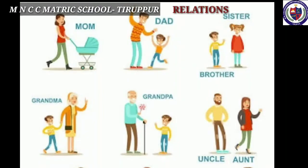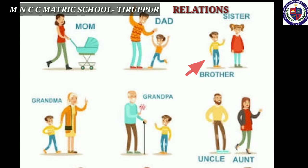See the picture. Now we will see about relations. Who is the first person in your family? It's your parents. Father and mother are called parents. Everyone has father and mother. Every family has a father and mother. Do you have a brother or sister? Brother and sister are called siblings.